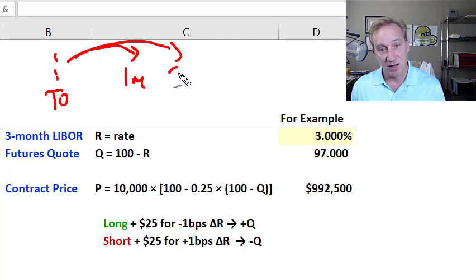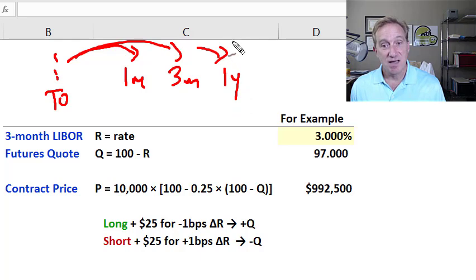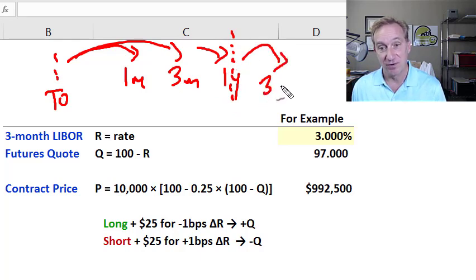What's relevant at maturity of the futures contract is the then-prevailing three-month LIBOR. See how the futures contract has its own maturity? It's a bet or a hedge on a future three-month LIBOR.